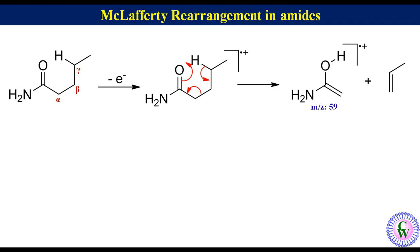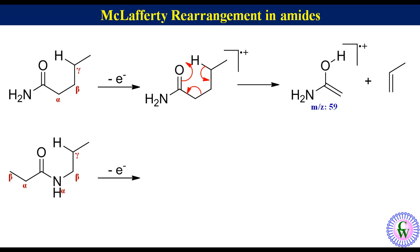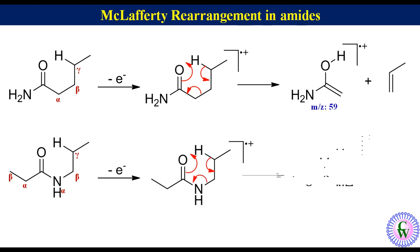An amide with an alkyl substituent at nitrogen having a hydrogen atom at the carbon gamma to the carbonyl group can also undergo McLafferty rearrangement. For example, N-propylpropanamide. The alkyl group attached to the carbonyl has only alpha and beta carbon, while the alkylamide group attached to the carbonyl has alpha, beta, and gamma atoms, and the gamma carbon has a hydrogen atom. Removal of one electron from the molecule gives the parent radical cation which undergoes McLafferty fragmentation to produce the McLafferty fragment and a butene molecule. The m/z value of the McLafferty fragment is 73.